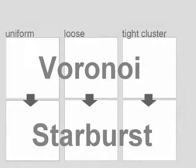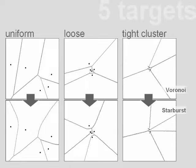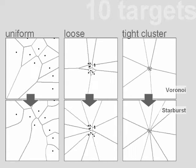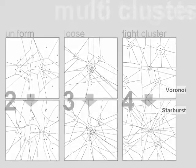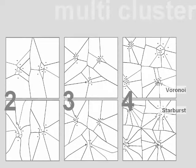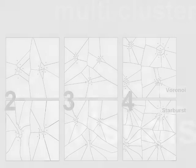Here are some sampled Starburst layouts, each one juxtaposed with the respective Voronoi layout. Note how additional targets in tighter clusters cause the Voronoi algorithm to create increasingly smaller tiles. Starburst, in contrast, always successfully connects all targets to available screen space.